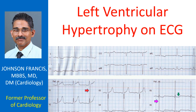Left ventricular hypertrophy is manifest in this ECG as tall R waves in lateral leads. The S wave in V1 is 2.5 mV and R wave in V6 is 2.2 mV, with a total of 4.7 mV, which is well beyond the 3.5 mV cutoff for diagnosis of left ventricular hypertrophy by voltage criteria.